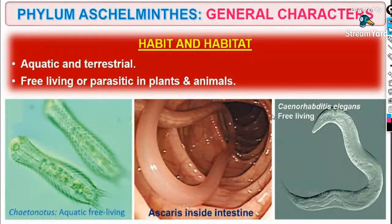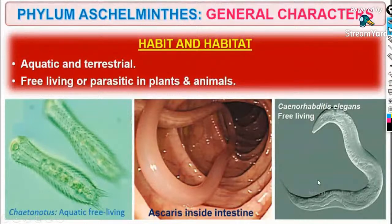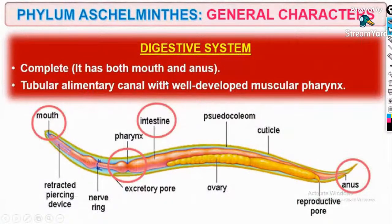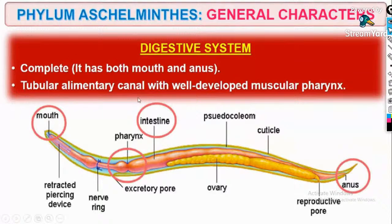Habit and habitat: some are aquatic, some are terrestrial, some are free-living, and some are parasitic in plants and animals. Look inside the intestine — you can see Ascaris. Digestive system: organ system level starts here, so the digestive system is complete — it has both mouth and anus. They have a tubular alimentary canal with a well-developed muscular pharynx. You can see the mouth, pharynx, intestine, and anus in the figure.